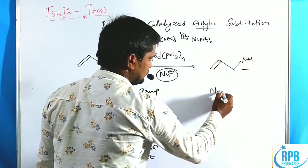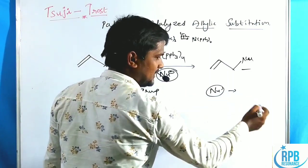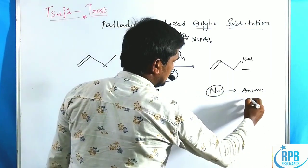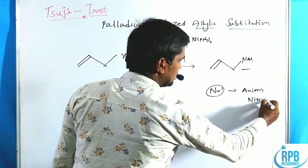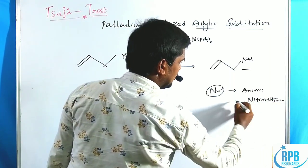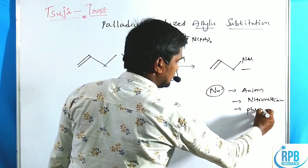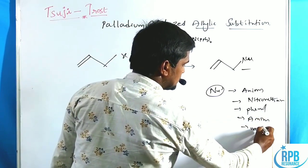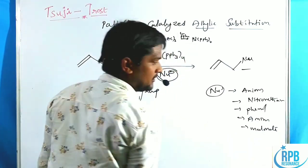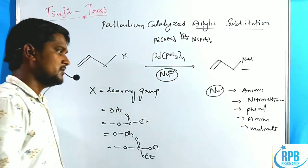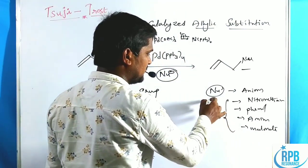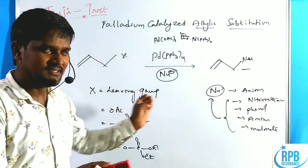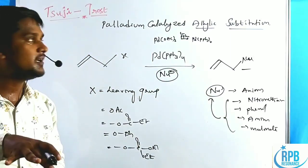The nucleophiles used in the Suji-Trost reaction include: cyanide (carbon nucleophile), sulfur nucleophiles, nitromethane, phenols, amines, and malonate compounds such as malonate esters (malonyl anion). These are the best examples of nucleophiles in the Suji-Trost reaction.